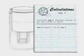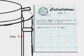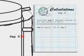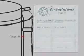Determine gap D between the outside of the pot and the inside of the skirt. Gap D equals 75% of gap C.